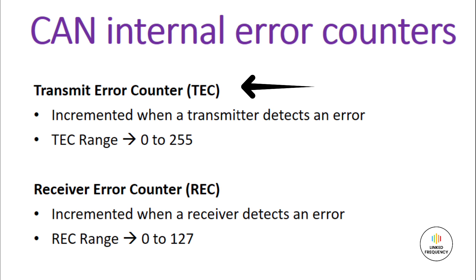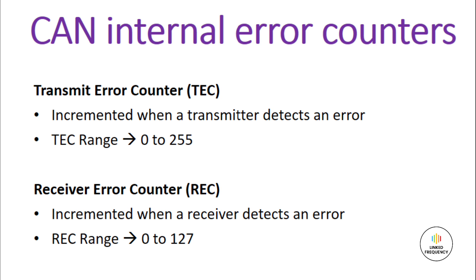The first counter is the transmit error counter, or TEC. It counts the number of transmission errors detected in frames that the ECU sends, and its value ranges from 0 to 255. The second one is the receive error counter, or REC. It counts the number of reception errors detected on frames that the ECU receives, and its value ranges from 0 to 127.